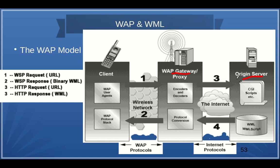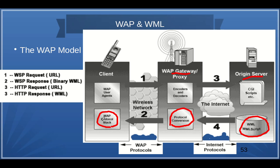The WAP gateway converts the WSP request into an HTTP request and sends it to the web server. The web server locates the web page, executes the server-side script, and prepares WML and WML Script — similar to how HTML and JavaScript work. The response is sent back to the gateway as HTTP. The gateway then converts it into binary WML (a WSP response), which is accepted by the WAP protocol stack and displayed in the thin browser on the wireless device.